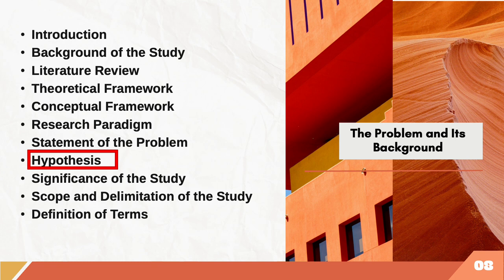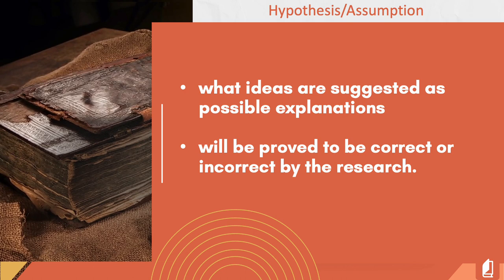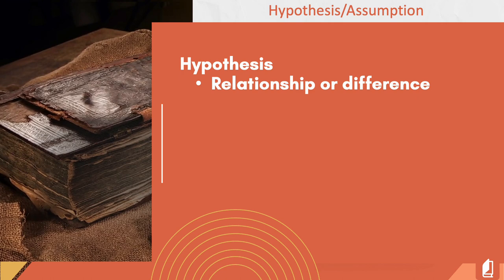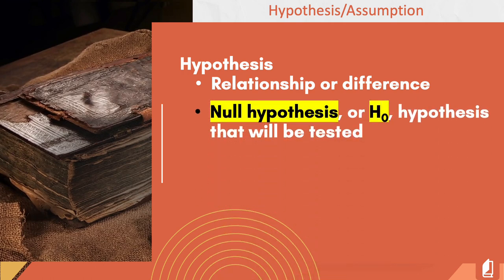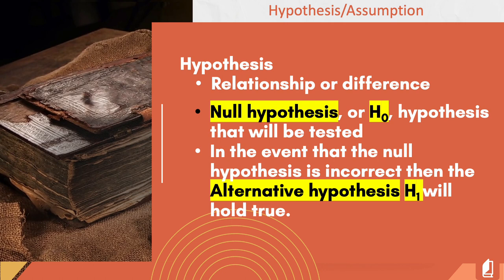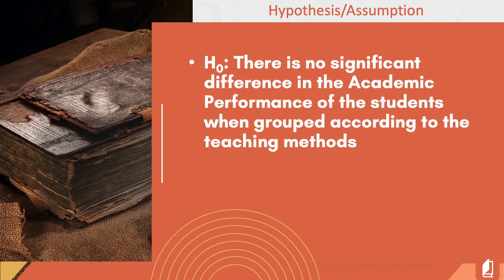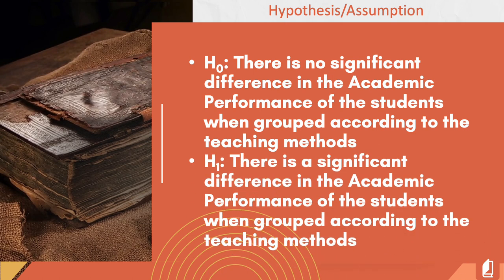Hypothesis or assumption describes what ideas are suggested as possible explanations for the problem, situation, or condition, and will be proved correct or incorrect by the research. A hypothesis tests the relationship, prediction, or difference. The null hypothesis is the hypothesis that will be tested, while the alternative hypothesis is what would hold true if the null hypothesis is incorrect. This shows the possible null hypothesis of the paradigm we created earlier, based on the behaviorism stimulus-response principle, along with the alternative hypothesis. Kindly observe how these were formulated.